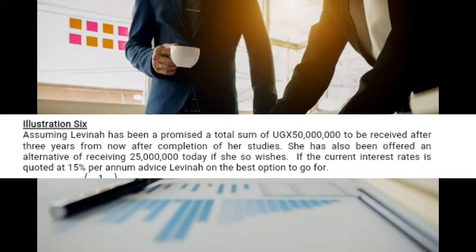If the current interest rate is quoted at 15 percent per annum, advise Levinia on the best option to go for. The 25 million today is in present value, while the 50 million is in future value. So we need to determine the present value of the 50 million to see which option is the best.